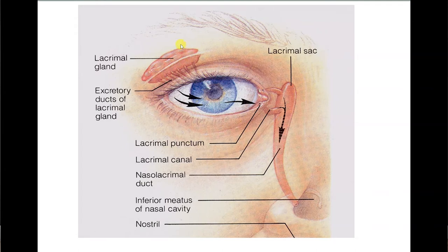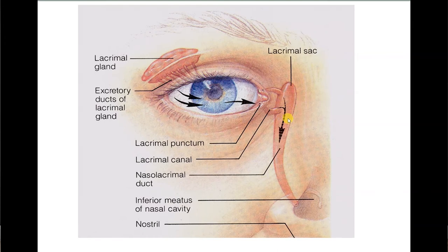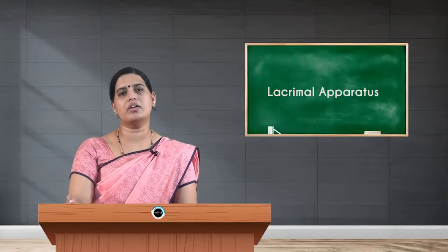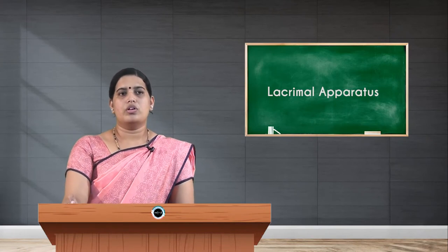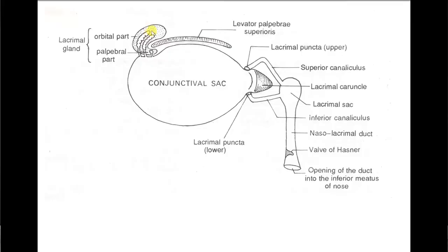Looking at a picture of the lacrimal apparatus, you find the lacrimal gland suprolaterally in the bony part of the orbit. You can also appreciate the excretory ducts opening into the conjunctival sac on the eye. The small openings on the medial portions of the eye are called lacrimal puncta, located in the lacrimal papillae. The fluid secreted from the lacrimal gland drains through the lacrimal canaliculi — superior and inferior — opening into the lacrimal sac, which leads to the nasolacrimal duct opening into the inferior meatus of the nose.